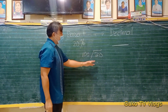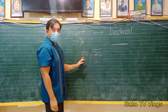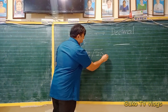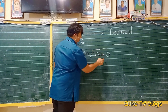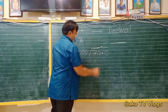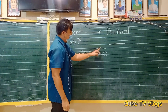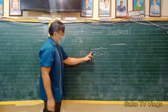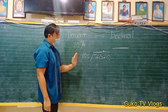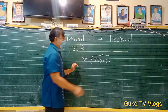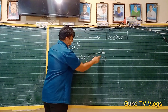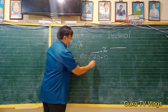Since 20 cannot be divided by 100, we must add a decimal point — point zero. So if we have a point here, we must also put a point here. The two decimal points must be aligned. So now we have 200 divided by 100. The answer is 2, because 2 times 100 is 200.